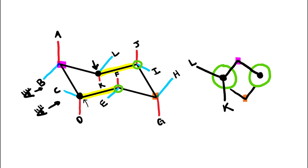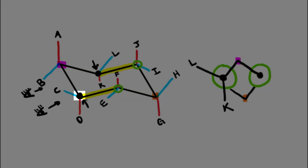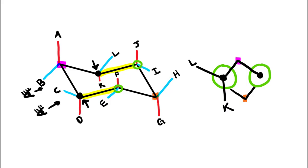We also have the letter L that is going up and to the side because it's equatorial, so it's going to be slanted up on the front carbon. On the other front carbon, we've got the letters C and D attached. The letter D is axial down, meaning it is going to be straight down on the other front carbon. And then the letter C is equatorial up, so it's going to be slanted up on the front carbon.